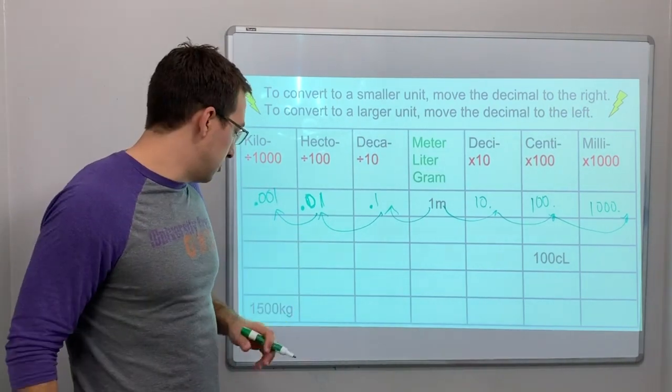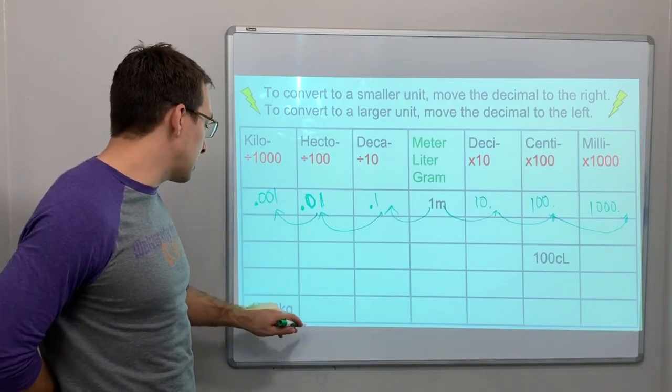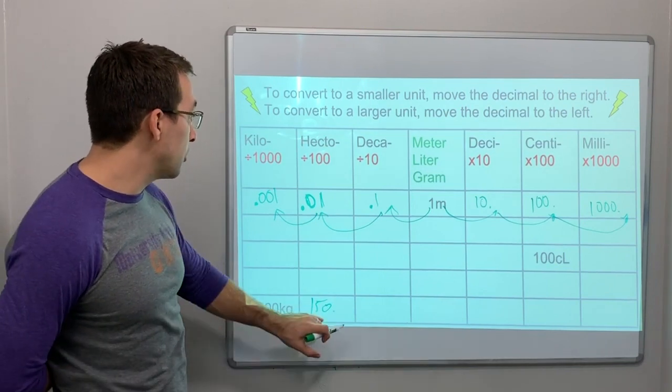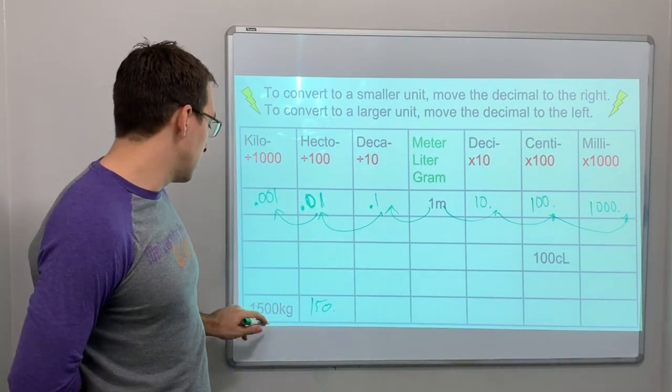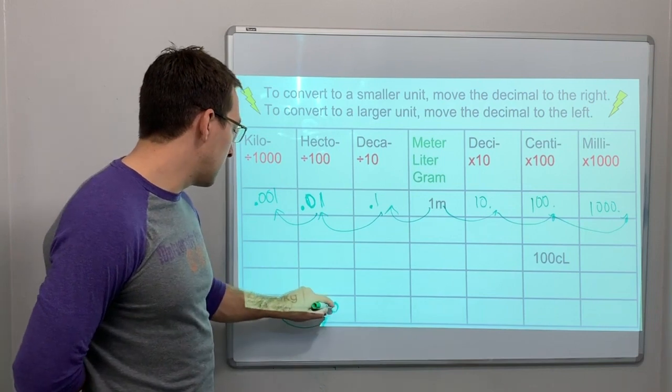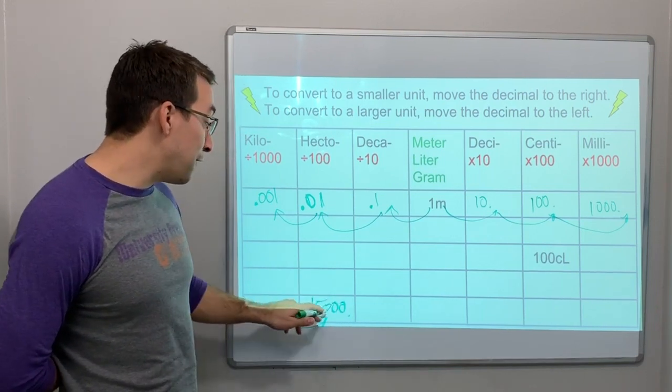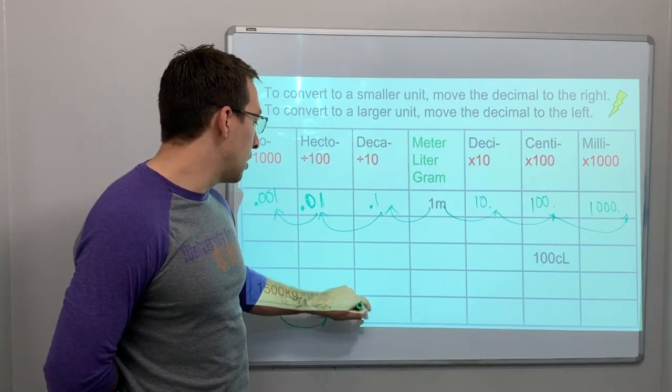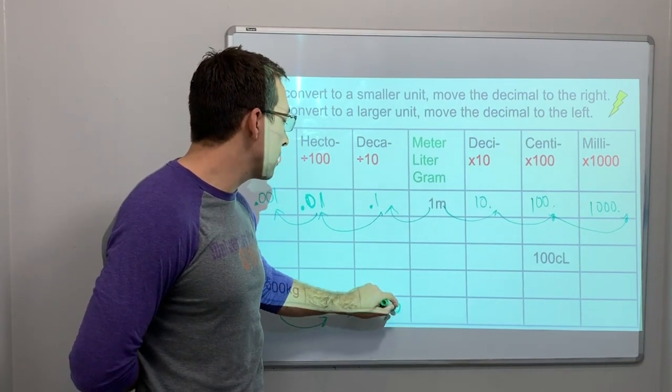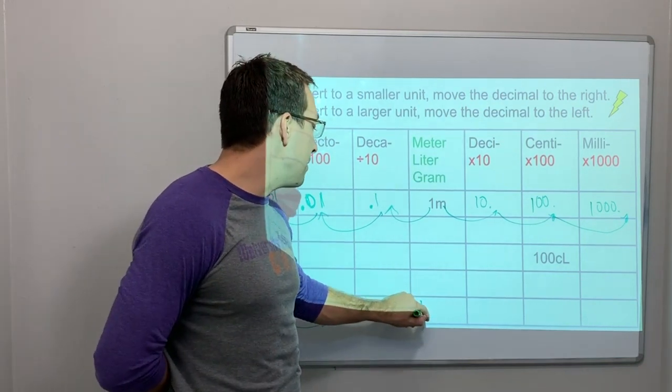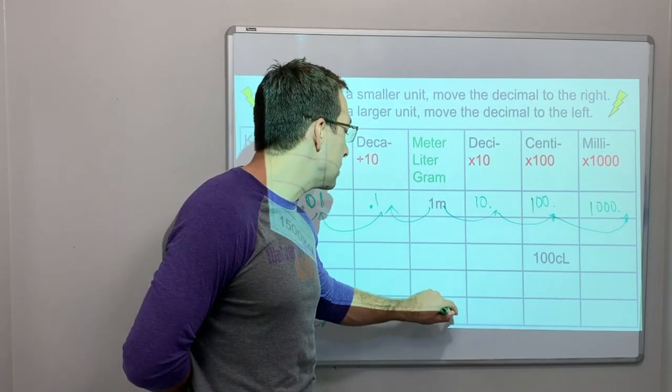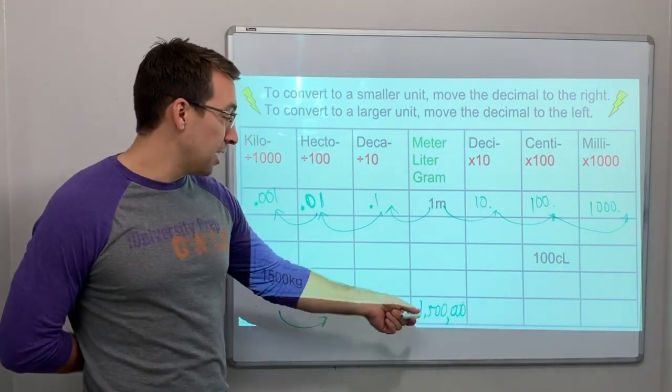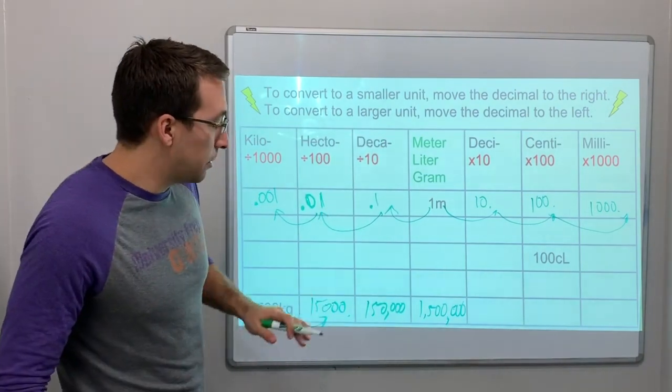All you have to do is move the decimal. Fifteen hundred kilograms, so let's go, we'll move it this direction. One hundred and fifty thousand decagrams. And then it's one million five hundred thousand grams. Isn't that cool? It's way cool. So there we go.